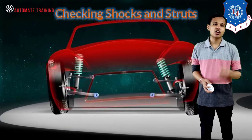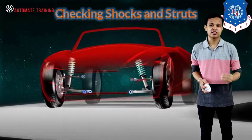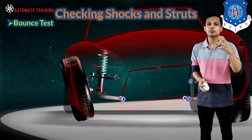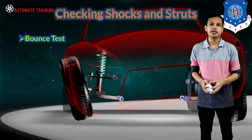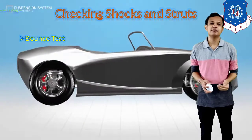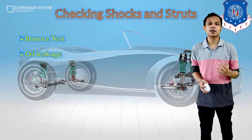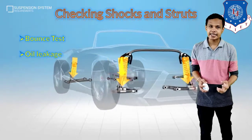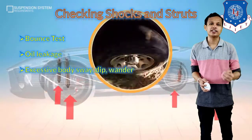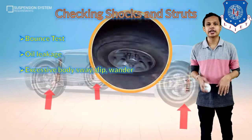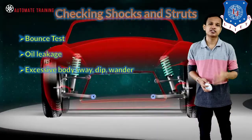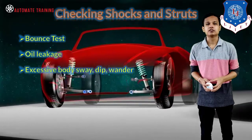The next thing is checking the shocks and the struts — checking the shock absorber and the strut on which it is mounted. For that, a bounce test of the vehicle will be done. The suspension will be bounced 10 to 12 times and we will see how quickly the shock is absorbed. Next we will check for fluid leakage, and we will also check if there is any excessive body sway, dip, or wander. If there are any issues, the shocks or the strut assembly will be replaced.